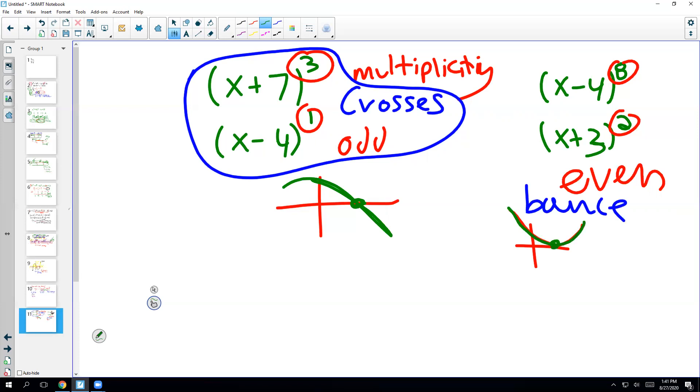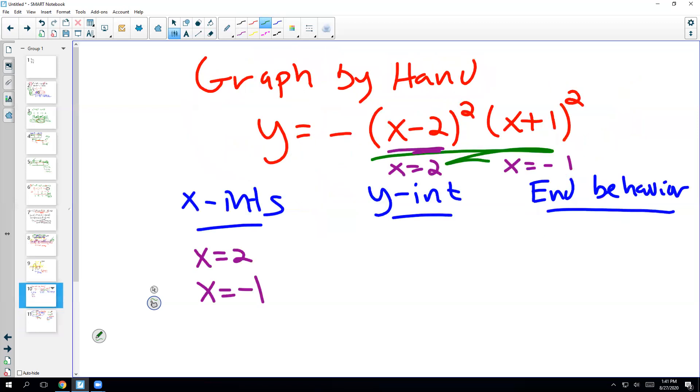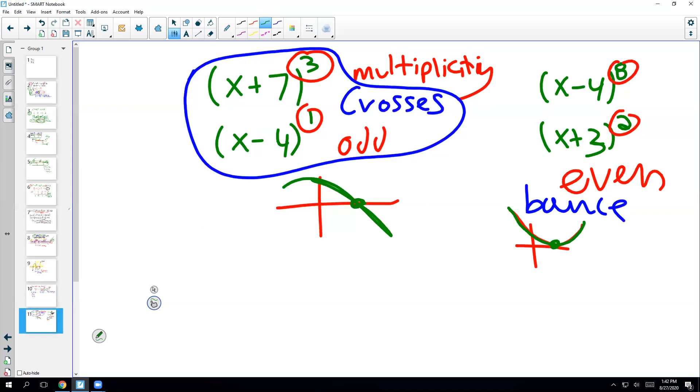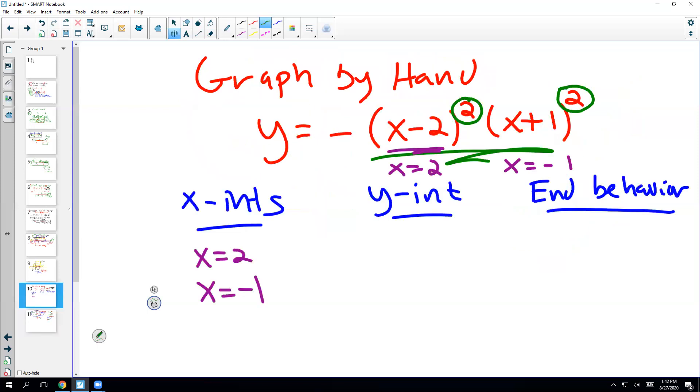Okay, so that's all to say that, in this case, the multiplicities, the numbers we're looking at, are these, the 2s. These are both evens. And evens always correspond to a bounce. So we know that both of these are going to be bounces because of that even multiplicity, that even exponent on each root.